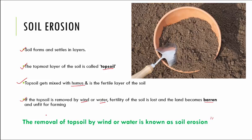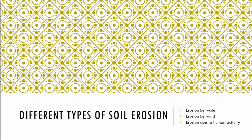Therefore, the definition of soil erosion is: the removal of topsoil by wind or water is known as soil erosion. Now that we know what soil erosion means, let us look at the various causes of soil erosion — erosion by water, erosion by wind, and erosion due to human activities.